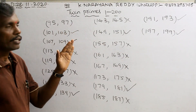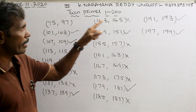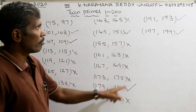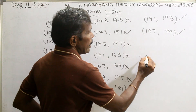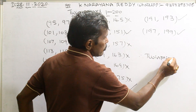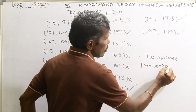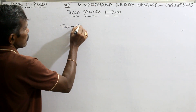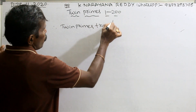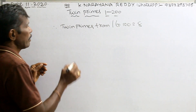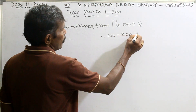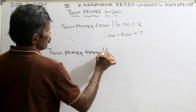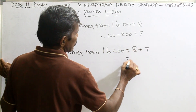We already know there are 8 twin primes from 1 to 100. From 100 to 200 there are 7 twin primes. Therefore, twin primes from 1 to 200 equals 8 plus 7, that is 15.